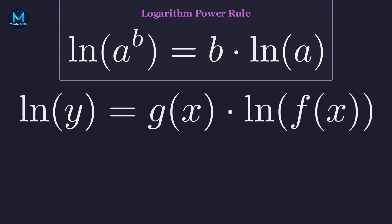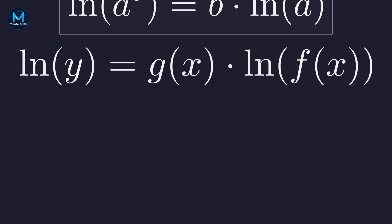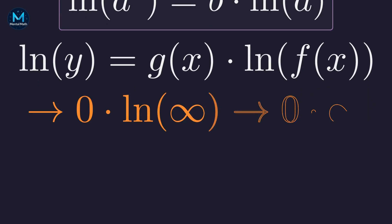Our equation becomes: the natural log of y equals g(x) times the natural log of f(x). This transforms our original infinity-to-the-zero problem into a different indeterminate form — zero times infinity — and this is a form we know how to work with.